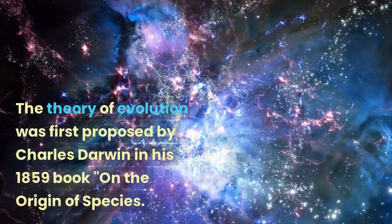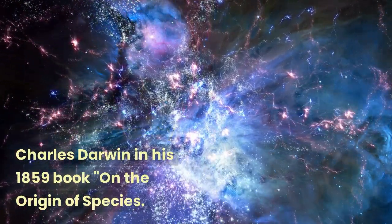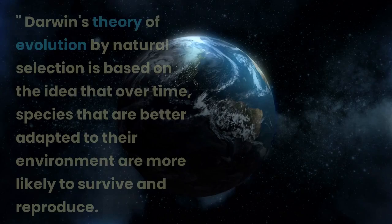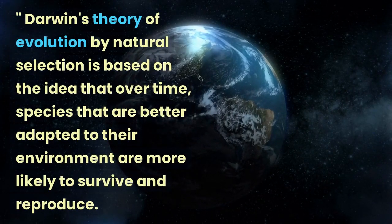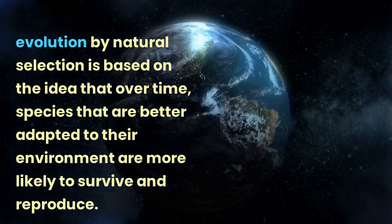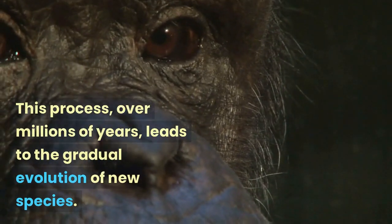The theory of evolution was first proposed by Charles Darwin in his 1859 book On the Origin of Species. Darwin's theory of evolution by natural selection is based on the idea that over time, species that are better adapted to their environment are more likely to survive and reproduce. This process, over millions of years, leads to the gradual evolution of new species.